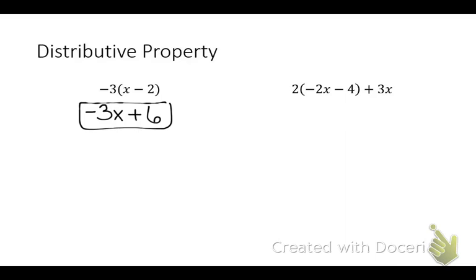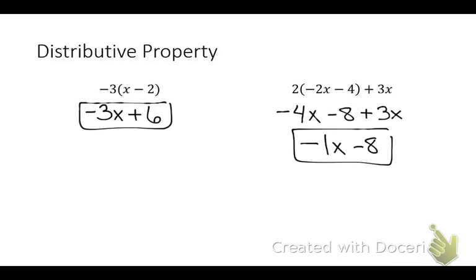Now on the next one, we have negative 4X. Is it plus 8 or minus 8? Minus 8 because it's times 1 negative and that's odd. So minus 8 plus 3X. Is this my final answer? No, because I can still combine my X's. What's negative 4 plus 3? Negative 1X minus 8. So that's distributive property.